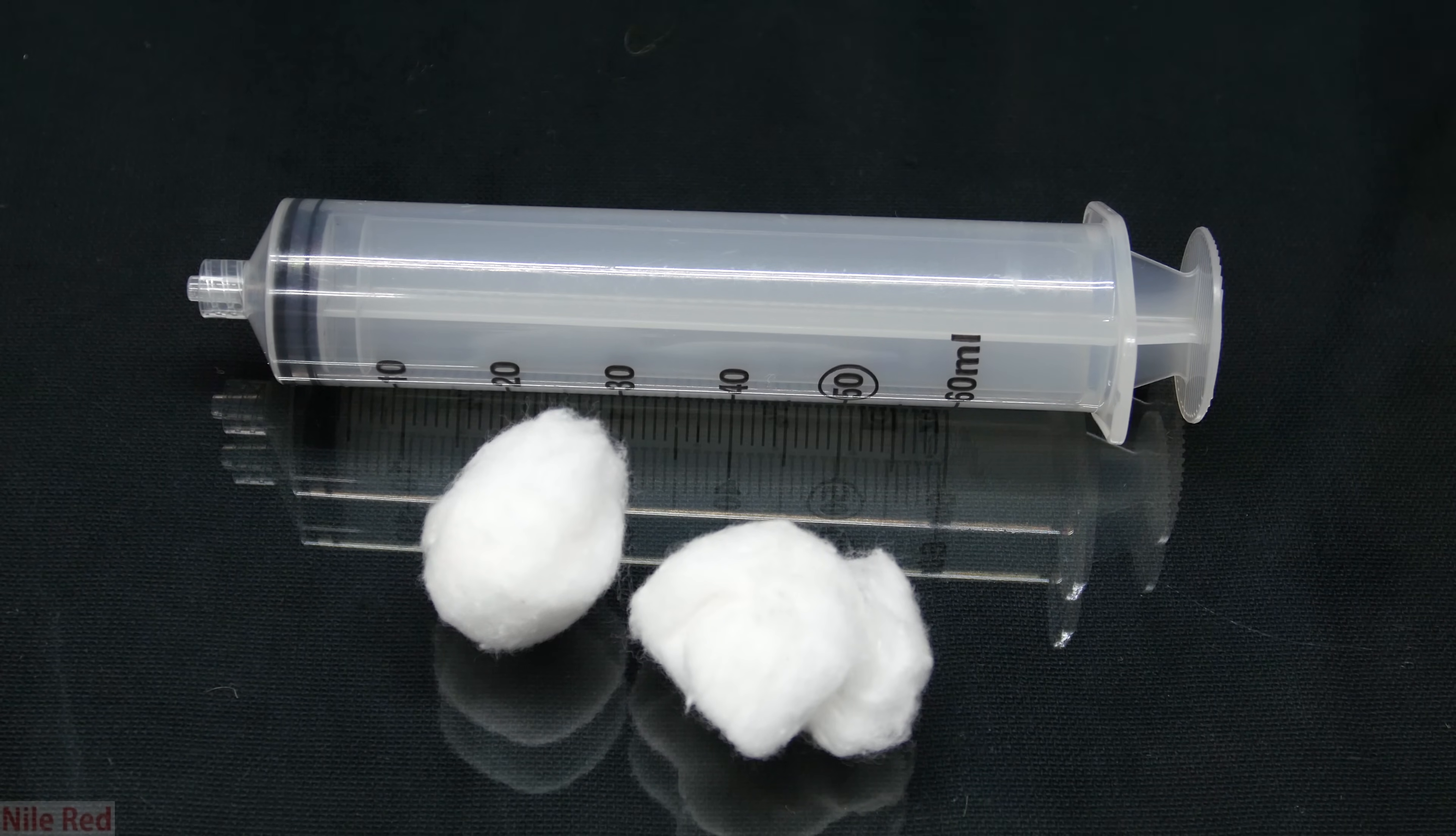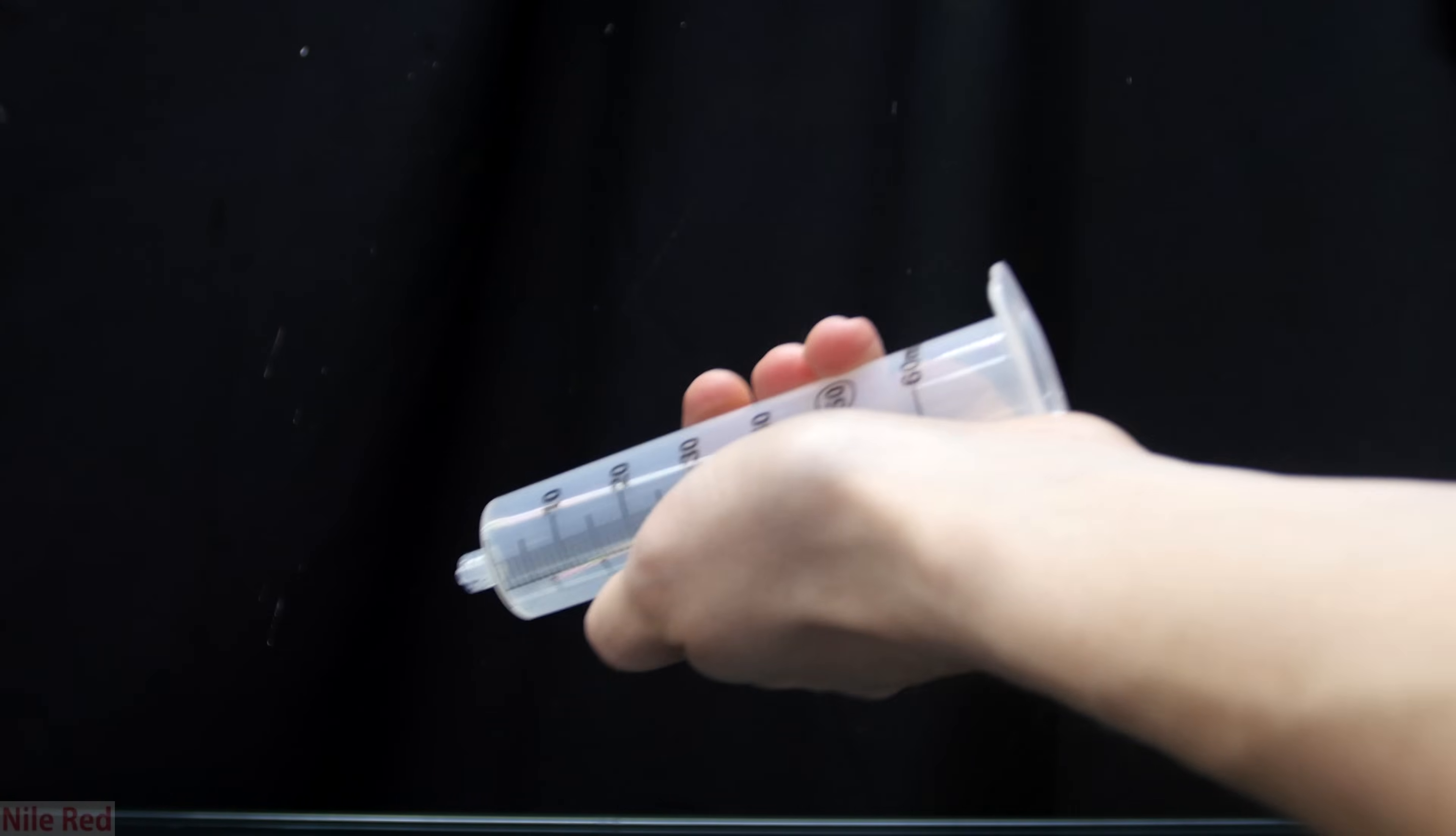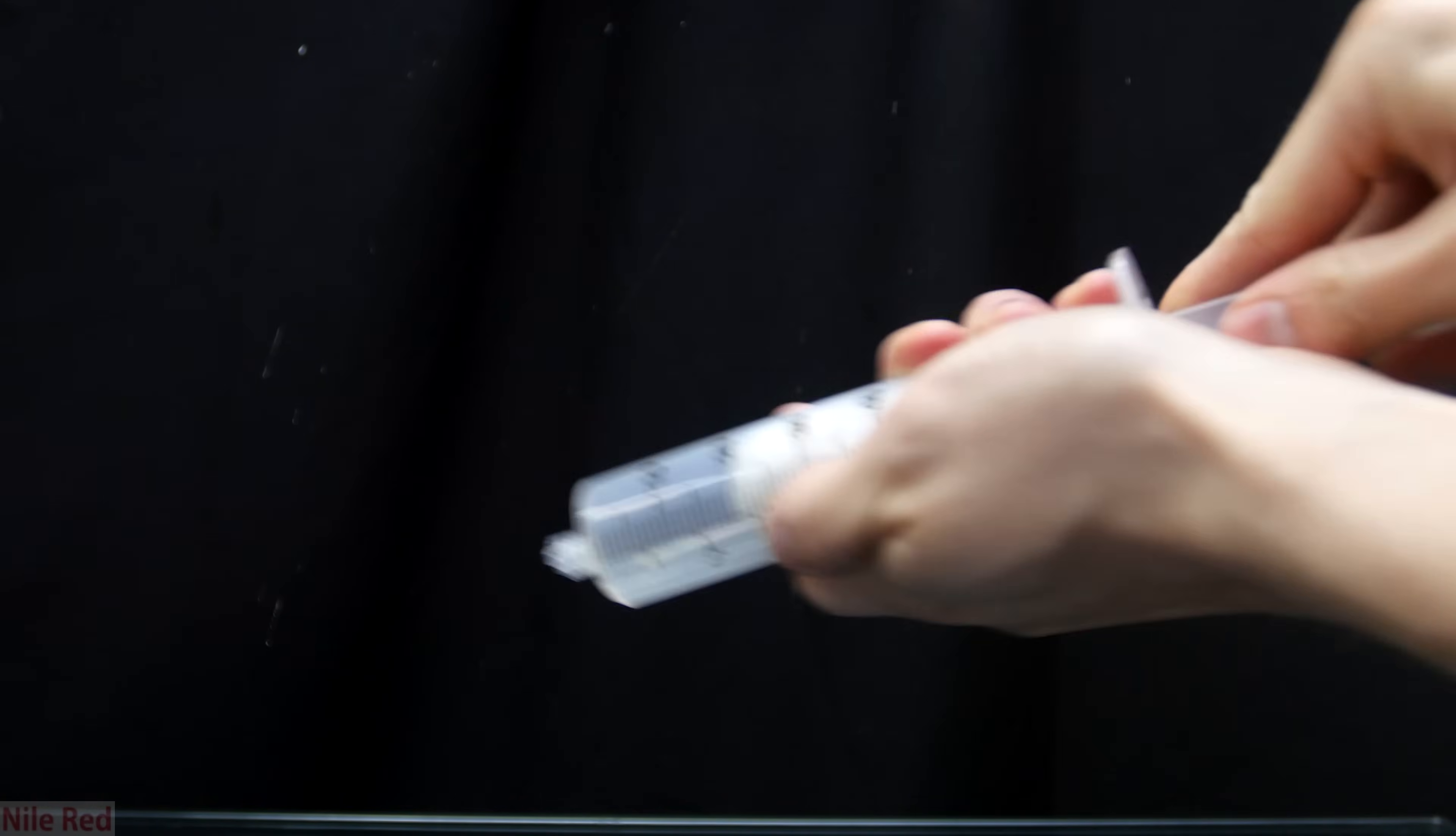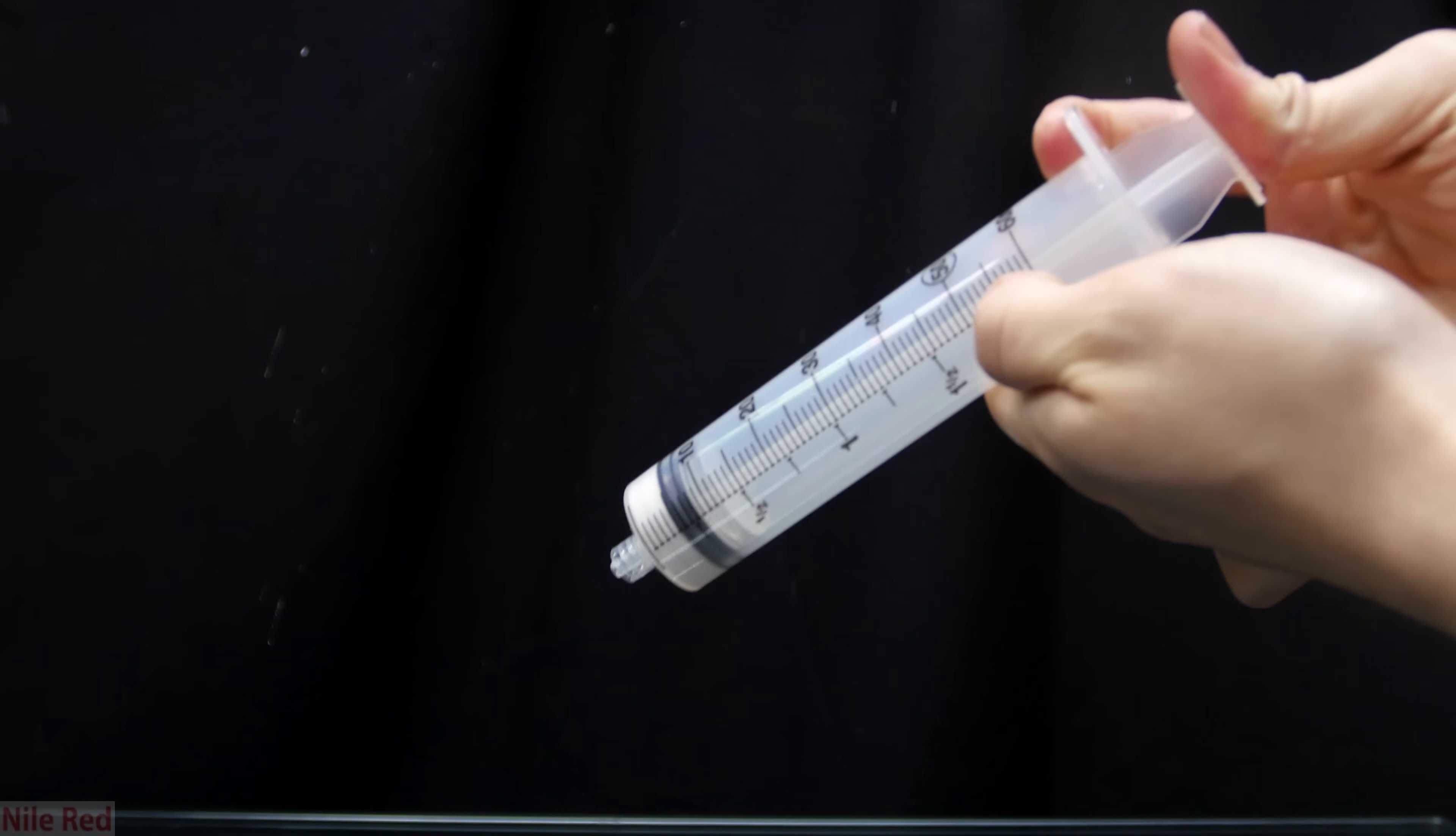For the first part of the process we need to filter the mercury and I find the best way to do this is using a syringe and some cotton balls. To prepare our filter it's really easy and we just put some cotton balls into the syringe and then jam it down to the bottom using the plunger. It's important to pack the cotton balls down as tightly as possible.